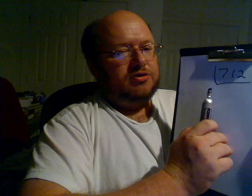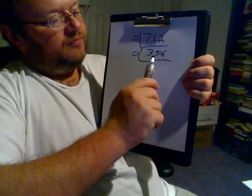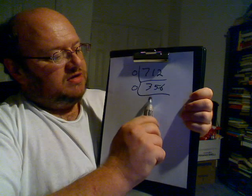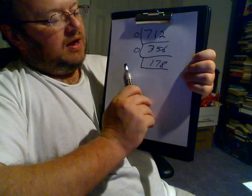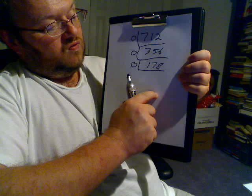Now let me do another problem. We'll do 712, let's say. I'll have to check these when doing it before I post these videos. Anyway, so 712 — that's an even number, so when you divide by 2, you're going to have a zero left over. The division of 712 gives 356. 356 is an even number, so the remainder is going to be zero, and that leaves us 178. 178 is an even number, so the remainder is going to be zero. Divide by 2 and that gives us 89.